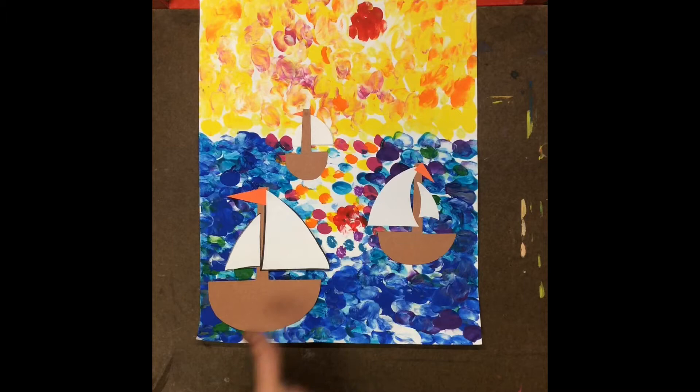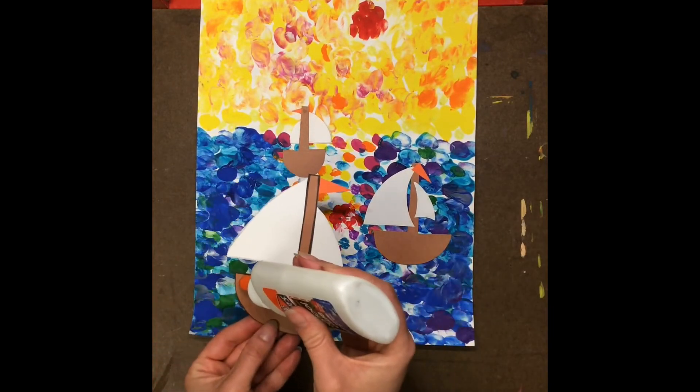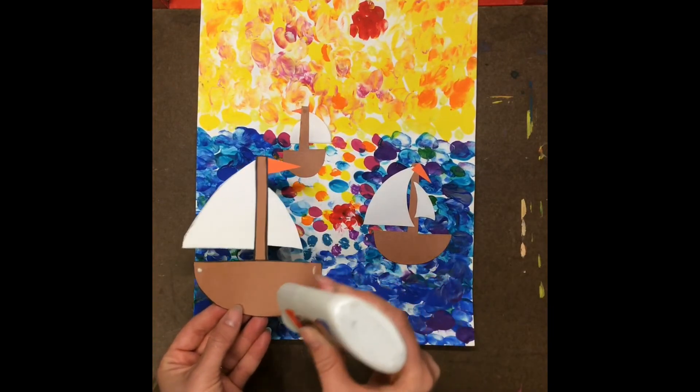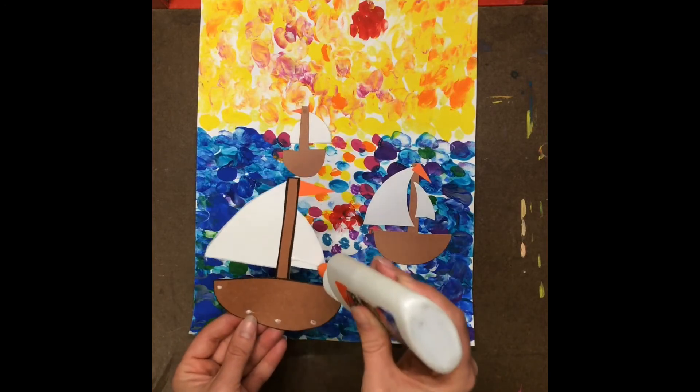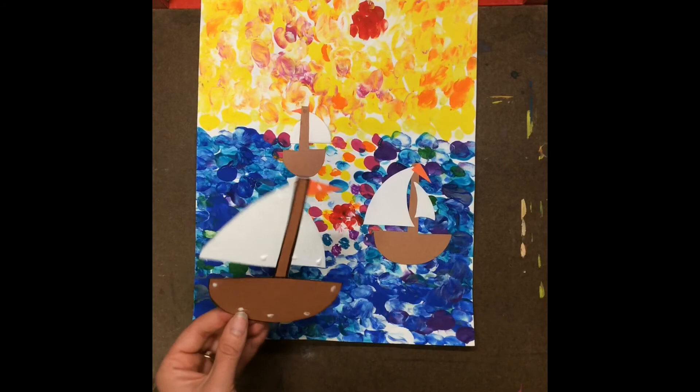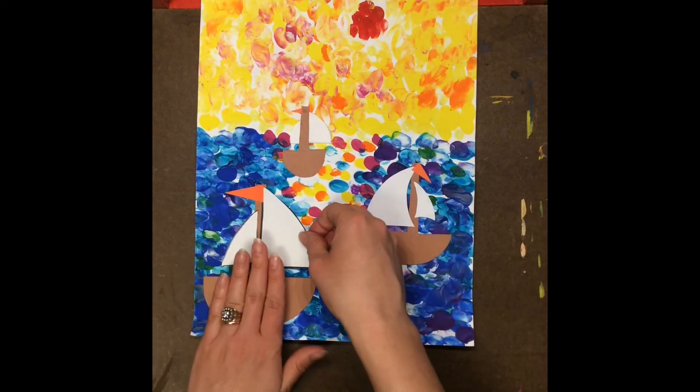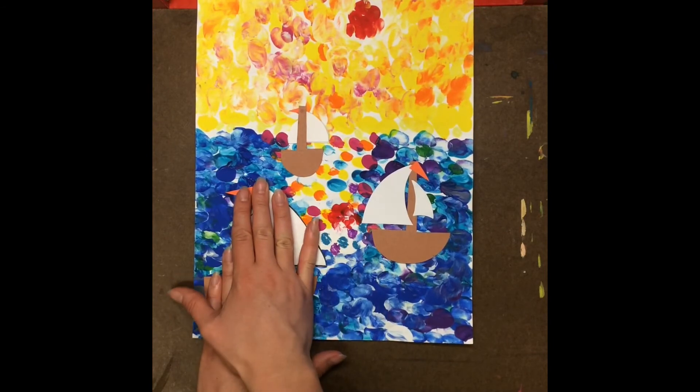Now when you have your boats at their three different heights, foreground, middle ground, and background, you can glue them down with some tiny glue dots. I'm just doing one boat at a time. That way I can get this one right back where it belongs. And you might have to hold it on for a few seconds.